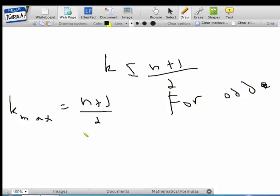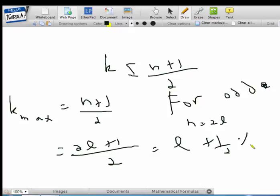But for even, this doesn't work. For even, let's say n equals 2l. So we get k max would be equal to 2l plus 1 over 2. And that would be l plus half. And this is not an integer. So this is not acceptable.